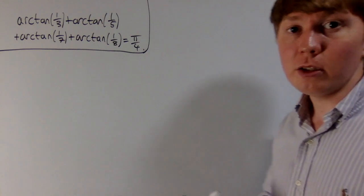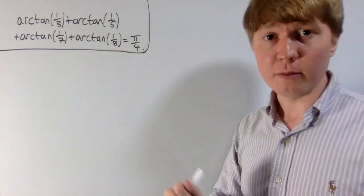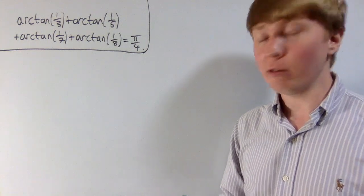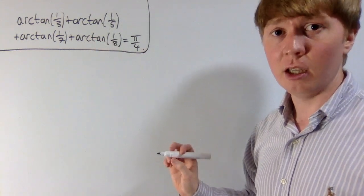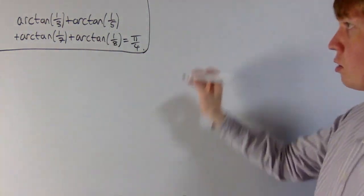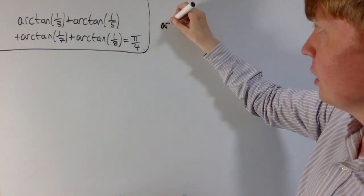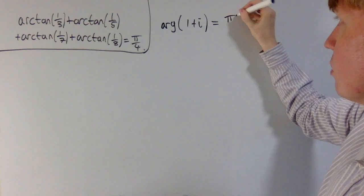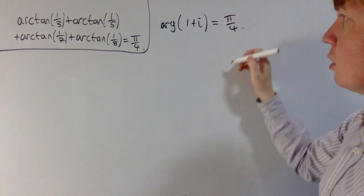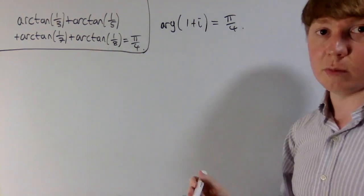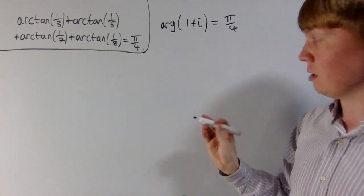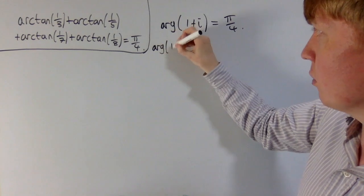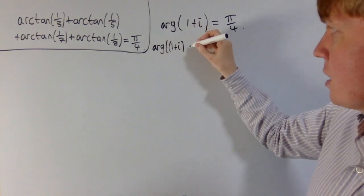Let's have a look behind the scenes of this problem — where it came from and how you could come up with something like it. The starting point is to pick a nice complex number. I chose one plus i, whose argument we know is equal to pi over four. The trick involves turning this into something that looks much more complicated but still has a nice answer, drawing on our knowledge of complex numbers.